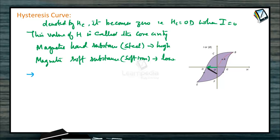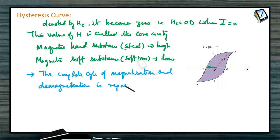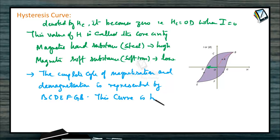When field H is further increased in the reverse direction, the intensity of magnetization attains a saturation value in the reverse direction, that is point E. When H is decreased to zero, I will change its direction, and following the steps we get the values E, F, G, B. Thus, the complete cycle of magnetization and demagnetization represents BCDEFGB. This curve is known as the hysteresis curve.